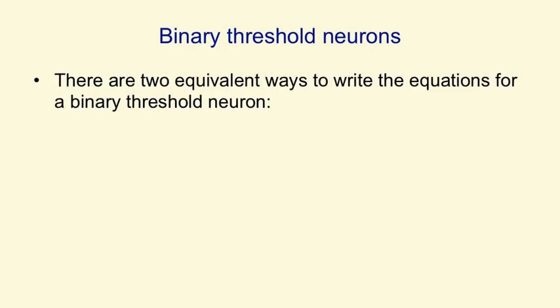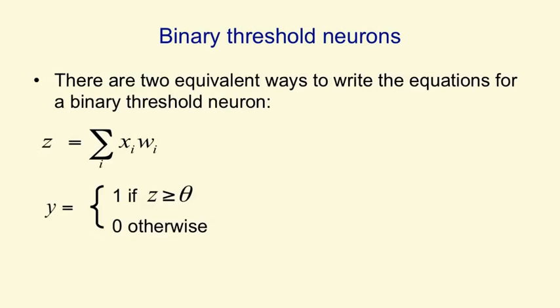There are actually two equivalent ways to write the equations for a binary threshold neuron. We can say that the total input z is just the activities on the input lines times the weights, and then the output y is 1 if that z is above the threshold, and 0 otherwise.